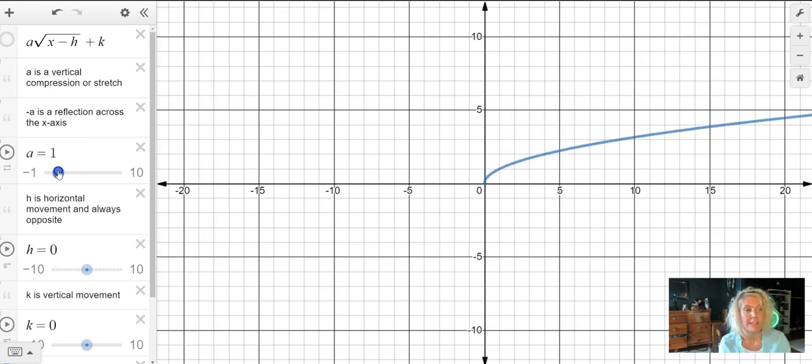Now if I slide the slider less than 1, where it becomes a fraction, notice it's still above the x-axis, but the branch is pretty flat. The branch will not fall below the x-axis until the a value reaches a negative number, so that would be a vertical reflection.